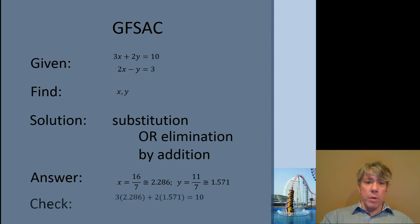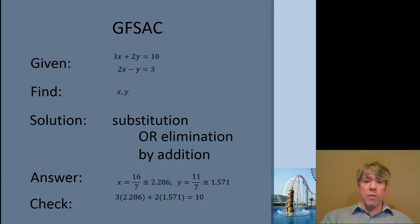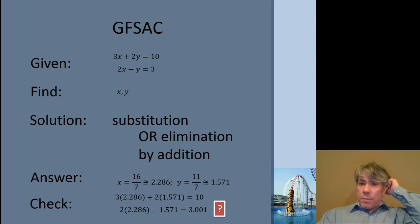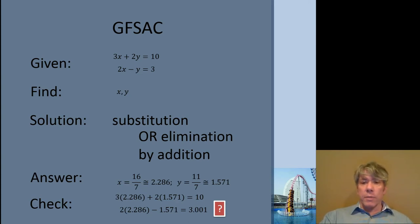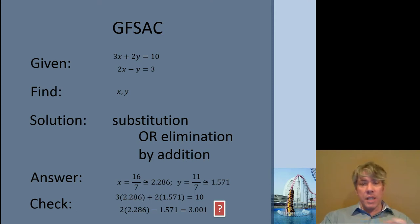The C on the end of GFSAC is also important: if there's a way, you should always check your answers. We have two equations and we think we have an X and Y that fit them — just back-substitute and check. We came up with 10 on the first equation but 3.001 on the second. Why? Because we rounded off. For example, 16 over 7 is about 2.286, but not exactly. We could plug in the fractions themselves and get the exact answer. Just remember that when checking, your numbers may be off slightly if you've rounded somewhere in the problem.